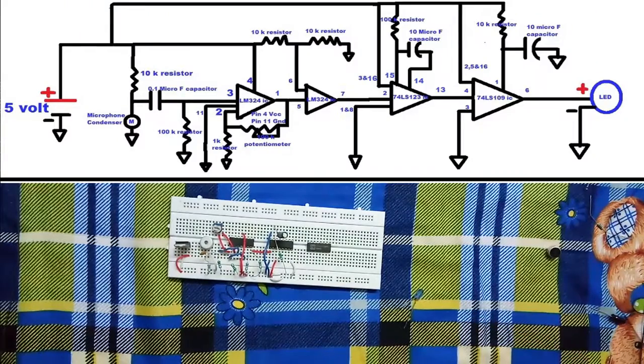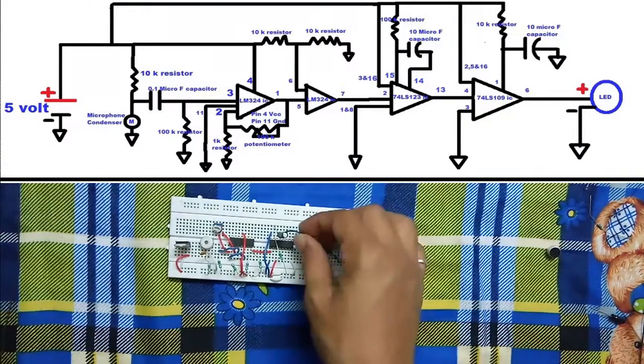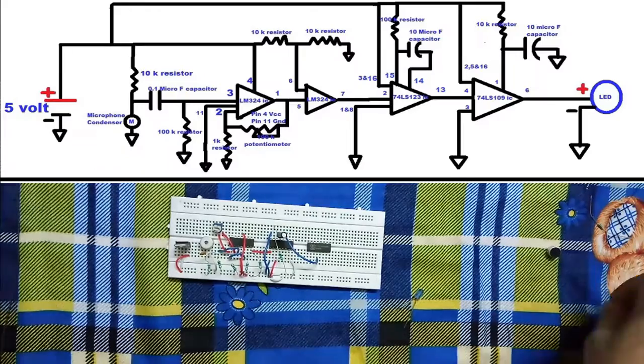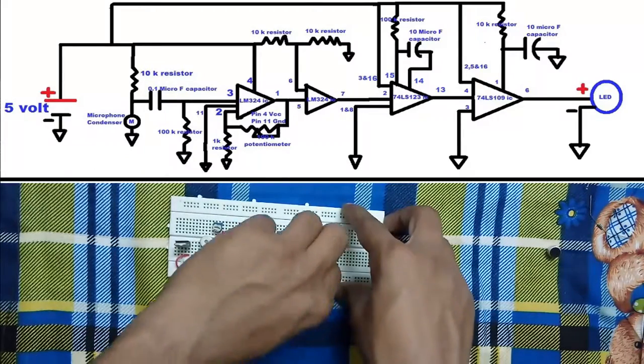Now here we have 74LS123 IC and 74LS109 IC. We will be connecting pin 13 of 74LS123 IC to pin 4 of 74LS109 IC.